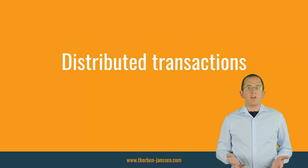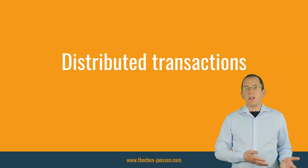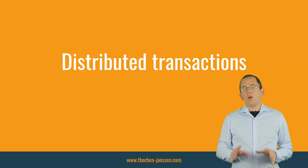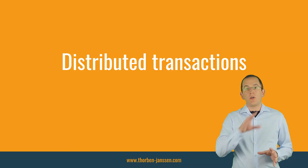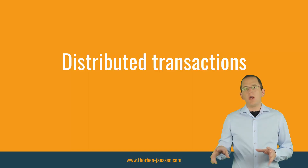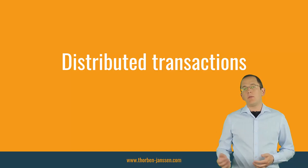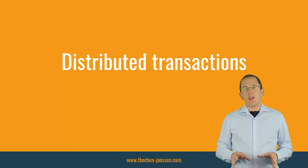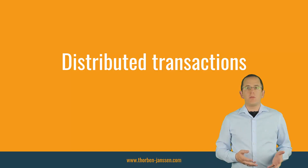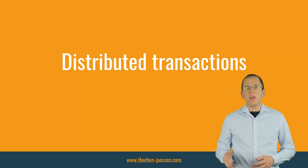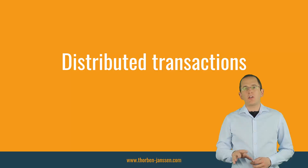In a monolithic application, or older distributed applications, we often use transactions that span over multiple external systems. Typical examples are transactions that include one or more databases, or a database and a message broker. These transactions are called global or distributed transactions. They enable you to apply the ACID principle to multiple systems. Unfortunately, they are not a good fit for microservice architecture. They use a pattern called two-phase commit.